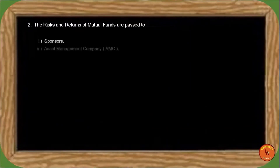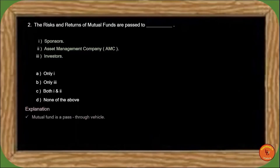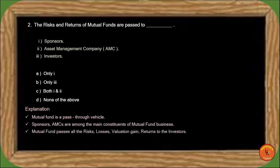Next question: The risk and returns of mutual funds are passed to whom? Mutual fund ek pass-through vehicle hai. Sponsors and AMCs are main constituents of the mutual fund business. Mutual fund passes all risks, losses, and valuation returns to investors. So the correct answer is option B.